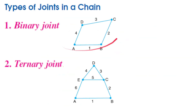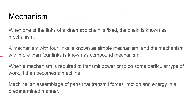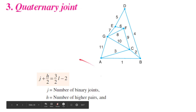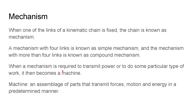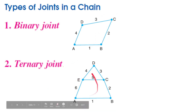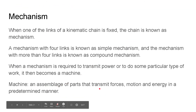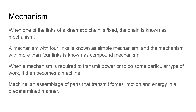A mechanism with more than four links is known as a compound mechanism. When a mechanism is required to transmit power or to do a particular type of work, it becomes a machine. A machine is an assemblage of parts that transmit forces, motion, or energy in a predetermined manner — we design our chains, links, and joints to produce a definite required motion at the end.